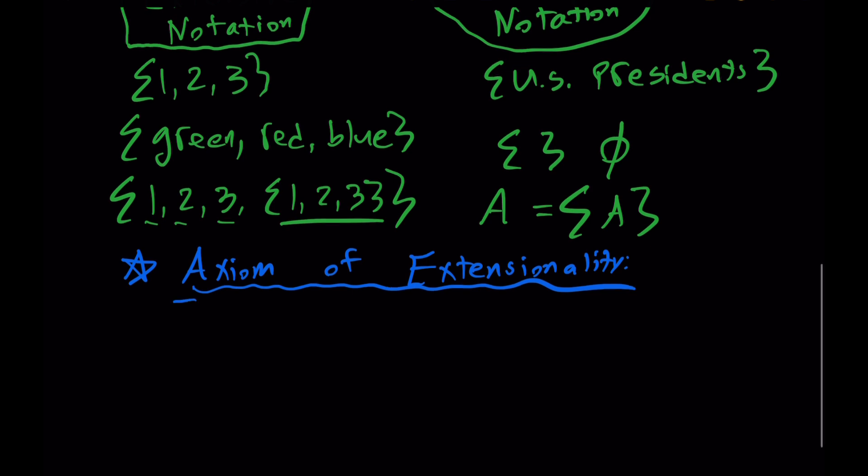We can say something like the following. For any sets, let's say A and B, A is equal to B if and only if (IFF) for all X, X is an element or member of set A if and only if X is a member or element of set B.